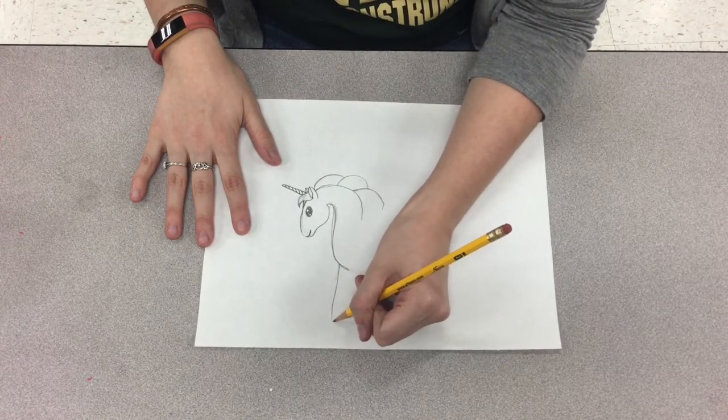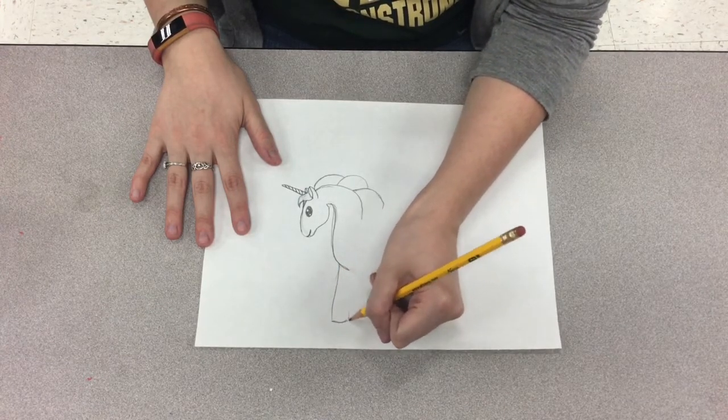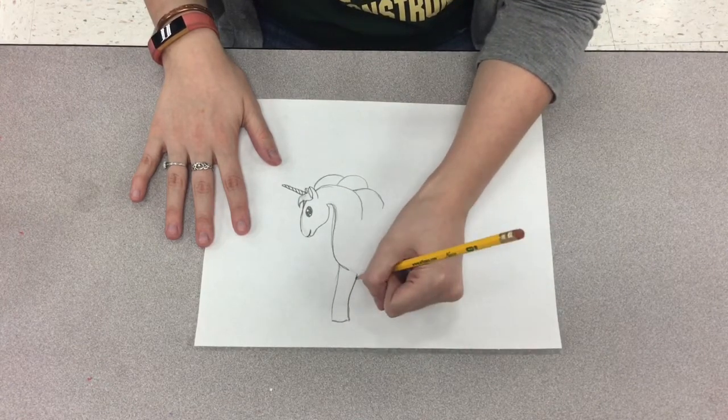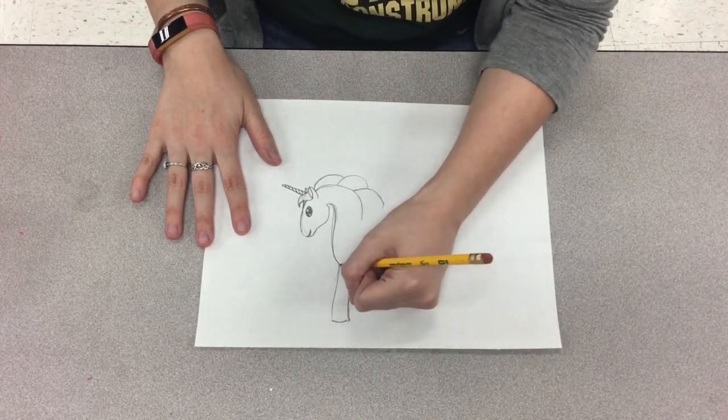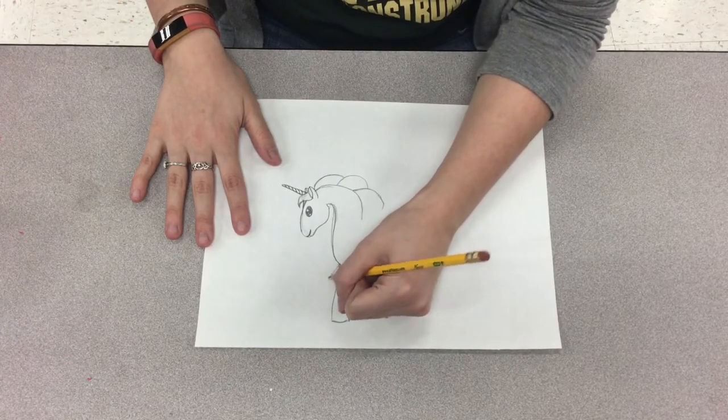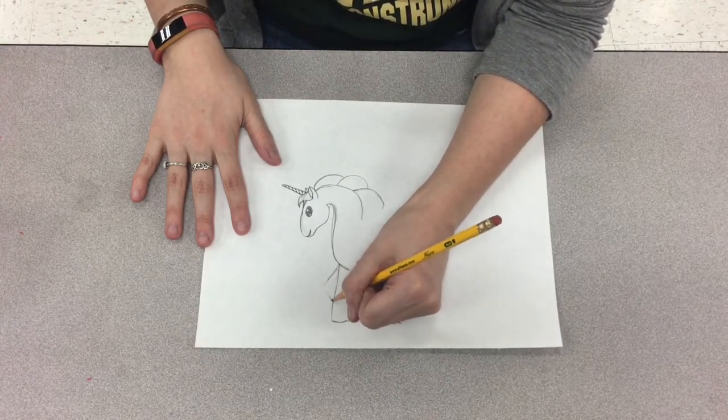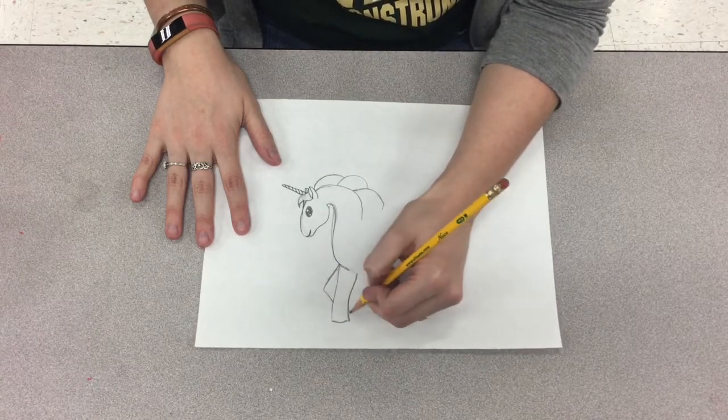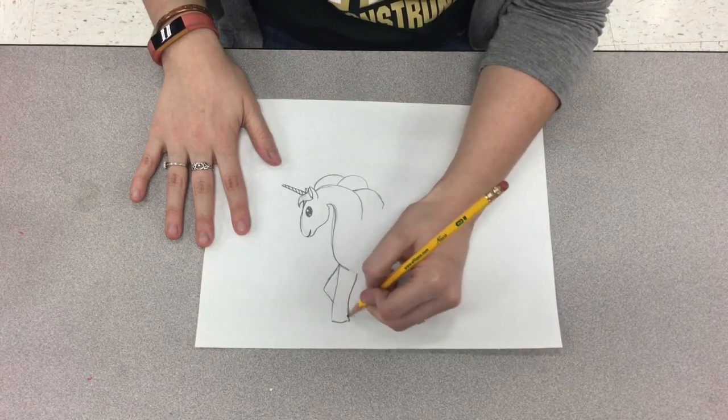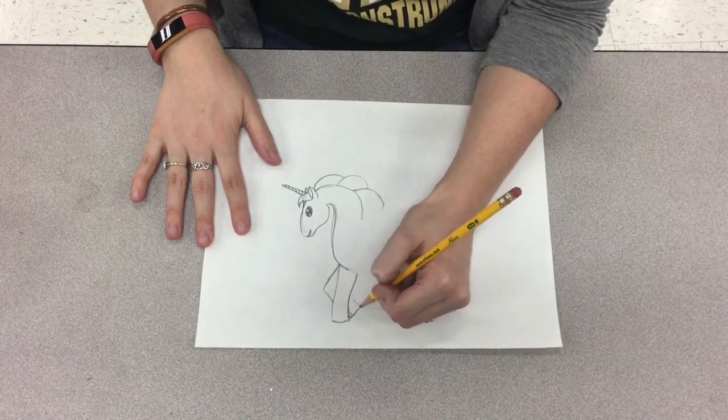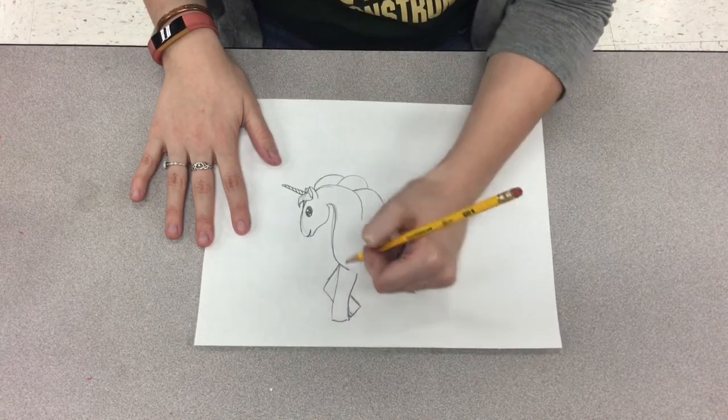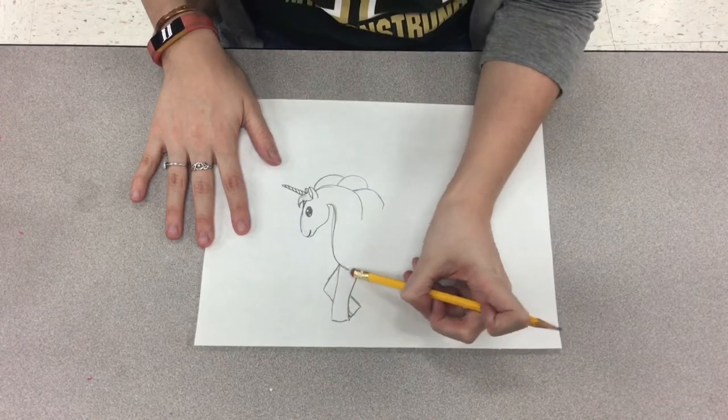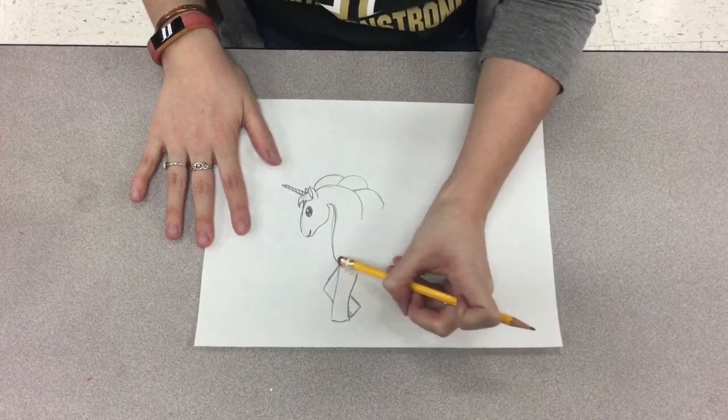Unicorns have four legs just like horses do. So I'm going to draw four different legs. I'm going to draw the one side that's closest to us straight, and the other side I'm going to draw both of the legs bent. In this one you'll see the leg behind, but in the next set of legs in the back I won't be able to see the bottom of the hoof.